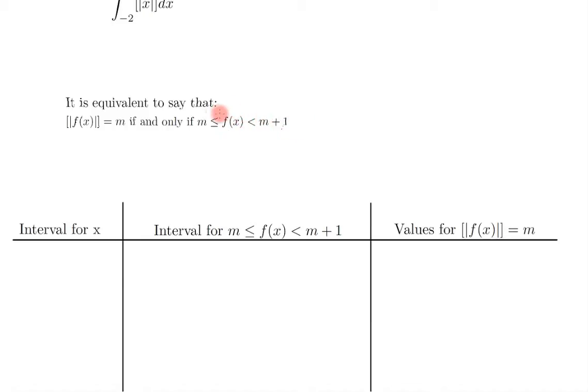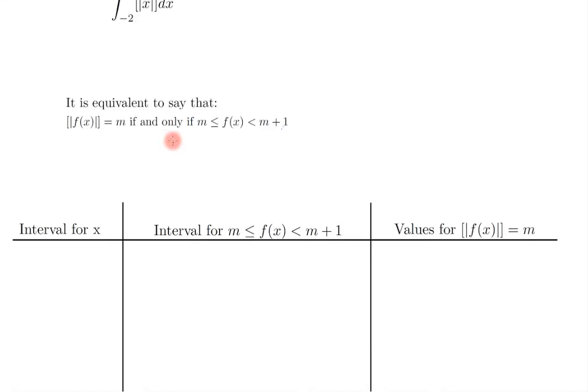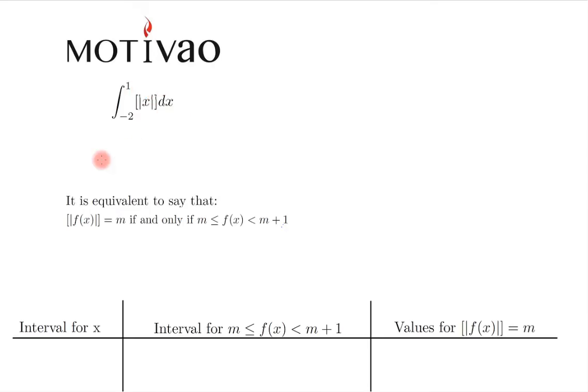And here, f of x is the function inside the integer function. Now, what is our f of x here? Well, f of x here is just x. So f of x here is equal to x. And now, the best way to solve this integral is by doing this table.